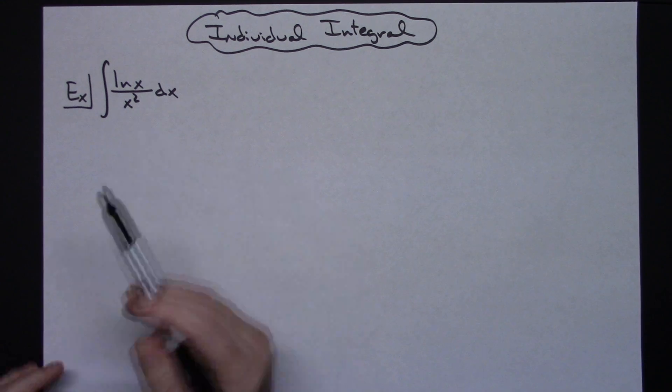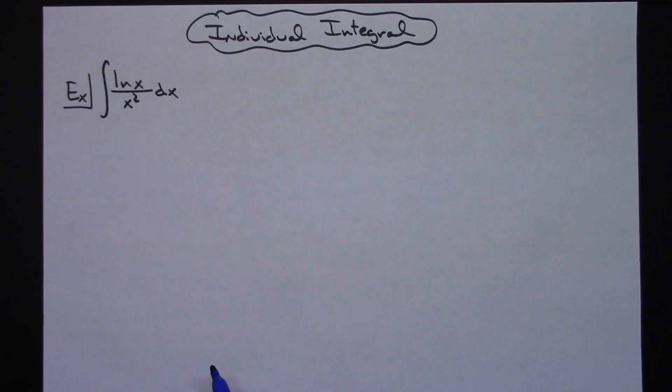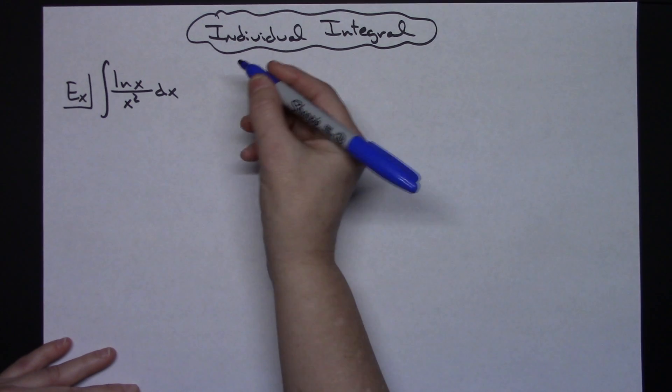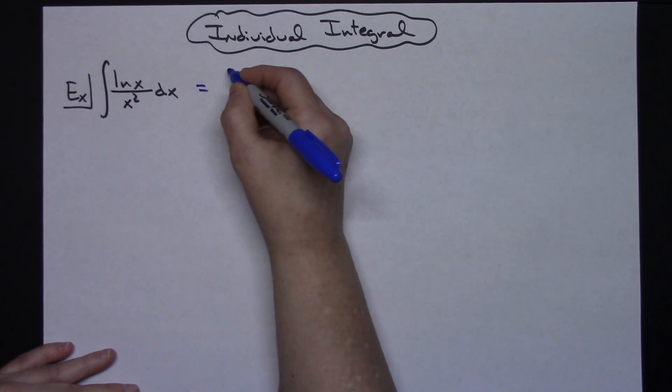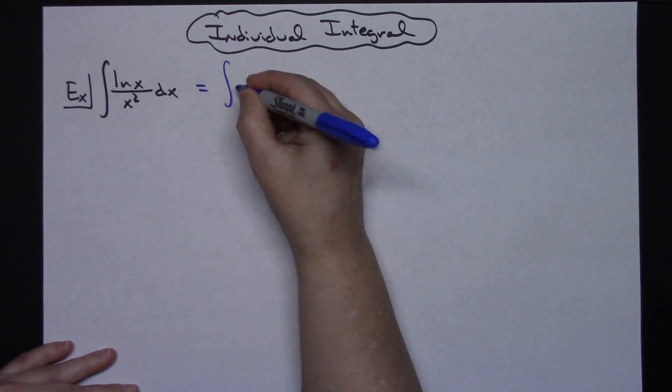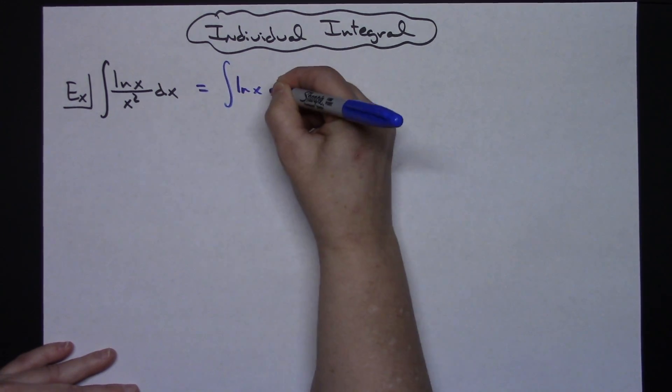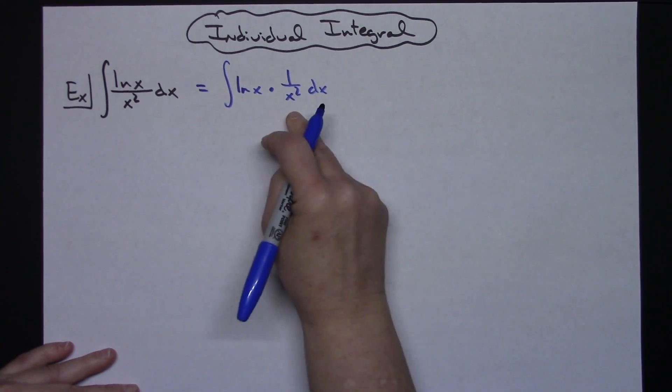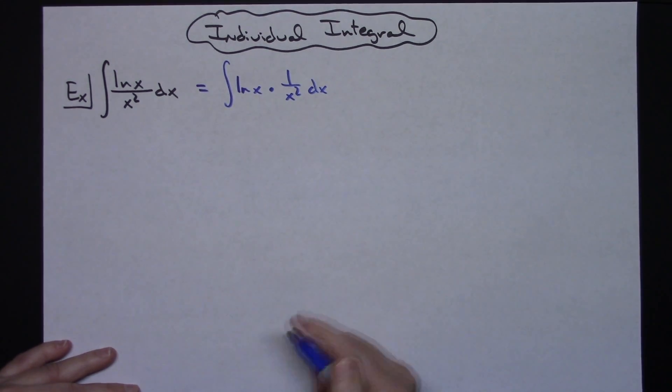Now this one turns out to be an integration by parts, but I'm going to do it with the integration by parts shortcut just to make it a little bit quicker. If you're not seeing that it is an integration by parts, you could rewrite this as natural log of x times one over x squared dx, and that's showing you that product there where we can use integration by parts.